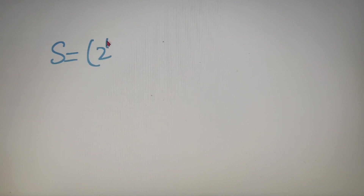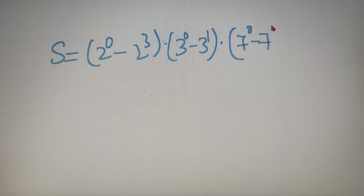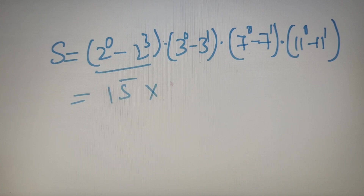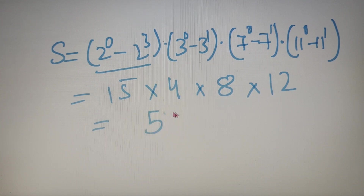Now the sum of factors of 1848 is equal to the sum of all values from 2⁰ to 2³, multiplied by the sum of all values from 3⁰ to 3¹, multiplied by the sum of all values from 7⁰ to 7¹, and lastly multiplied by the sum of all values from 11⁰ to 11¹. The sum of the first part comes out to be 15, the second part 4, the third part 8, and the last part 12. The product of all four numbers gives the sum of factors of 1848, which comes out to be 5760.